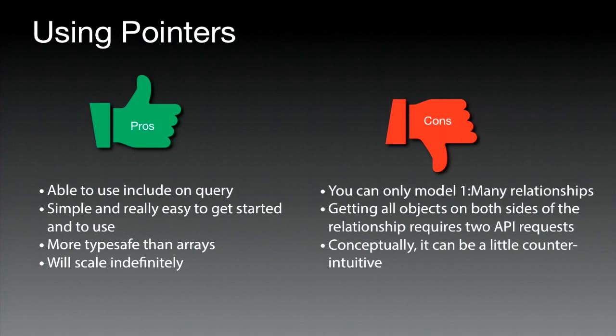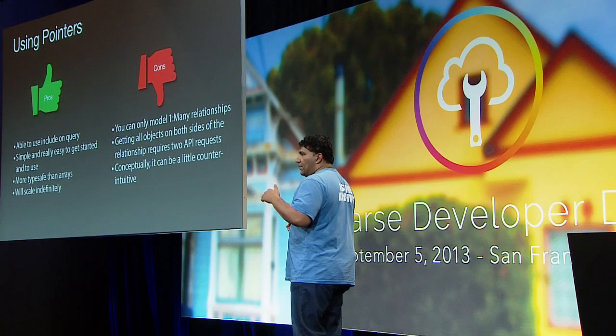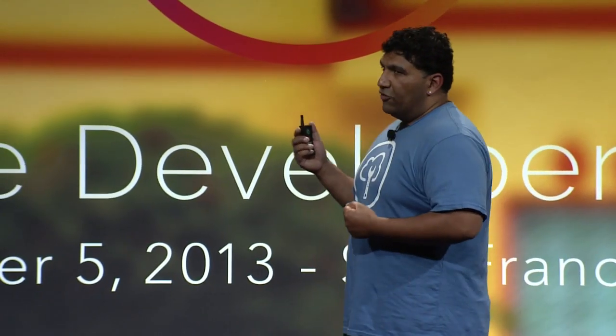Pointers also scale indefinitely. If Zuck posts a status on Facebook and gets 10,000 comments within an hour, you want to support lots of comments — and pointers will scale indefinitely. The main disadvantage is you can only model one-to-many relationships with pointers. If you're not sure whether a relationship will remain one-to-many, you might think twice — but for most cases where you know it's one-to-many, pointers are your best bet.